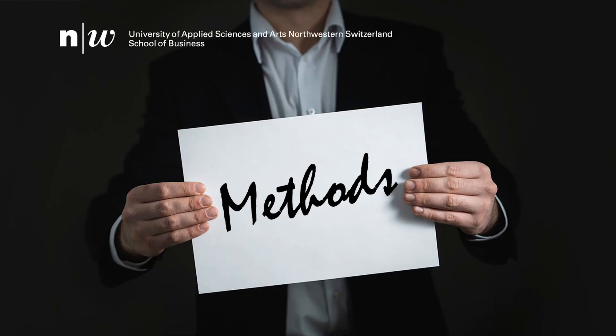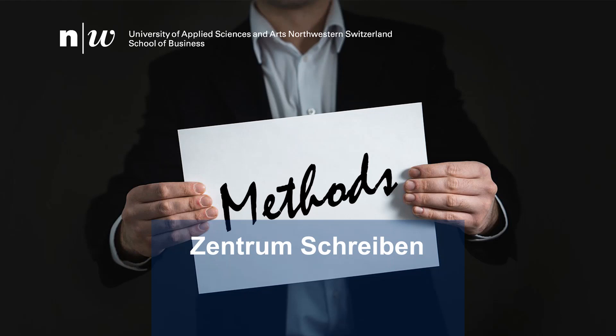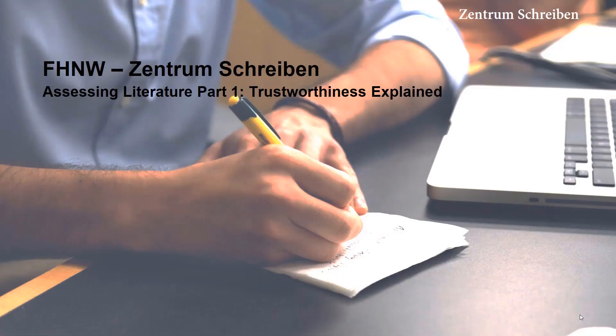Hi and welcome to this FH&W Centrum Schreiben tutorial. This is part one in a two-part series on how to critically assess literature for your own research. By the end of this tutorial you'll understand what criteria should be met by the literature you use in your research, and specifically how to assess whether literature is current and trustworthy.